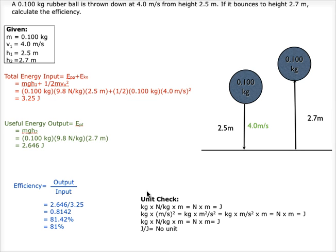Finally, we do our unit check. Kilograms times newtons per kilogram times meters — the kilograms cancel, giving us newtons times meters, which equals joules. For the kinetic energy term: kilograms times meters per second squared equals kilograms times meters squared per second squared, which equals newtons times meters, which equals joules. We then divide joules by joules, giving us no unit.